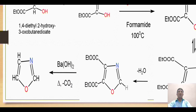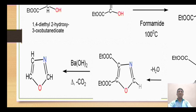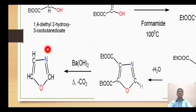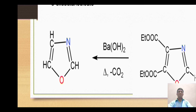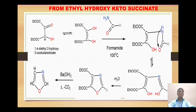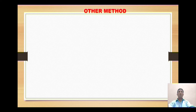On heating, the carboxylic acid groups liberate carbon dioxide molecules — two CO2 molecules are released — to give the formation of our desired heterocycle, oxazole.